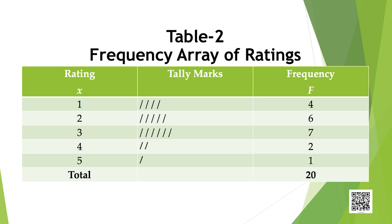However, the counting of frequencies can be done more conveniently if we use tally marks or tally bars. Let us illustrate this with Table 2 shown on the screen. We put a single tally mark for each student. There are 4 students who gave the rating 1, so 4 tally marks are placed against x = 1. Six tally marks are placed against x = 2, and so on. For convenience, the 5th tally mark is shown across the earlier 4, which helps in counting.